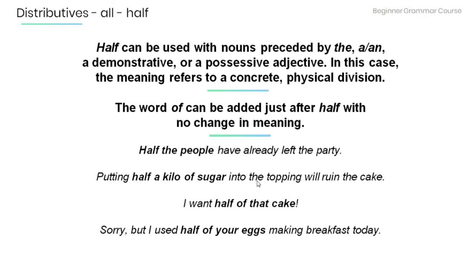More examples: 'Putting half a kilo of sugar in the topping will ruin the cake,' meaning we should put just a quarter of that amount. 'I want half of that cake,' meaning I do not want the whole cake — just half of it. 'Sorry, but I used half of your eggs making breakfast today,' meaning that if there were 12 eggs, only six were used for breakfast.